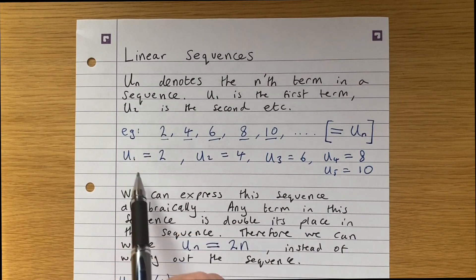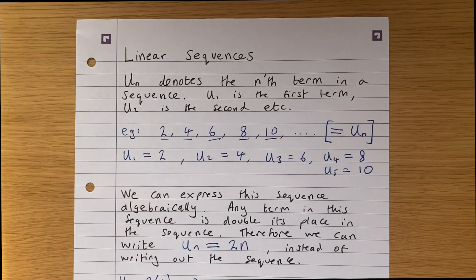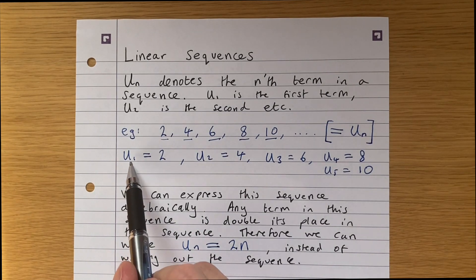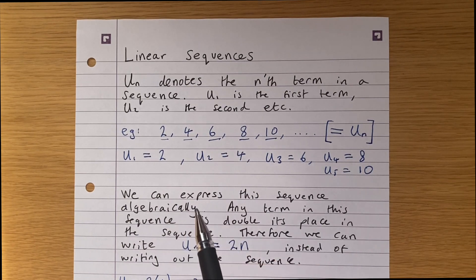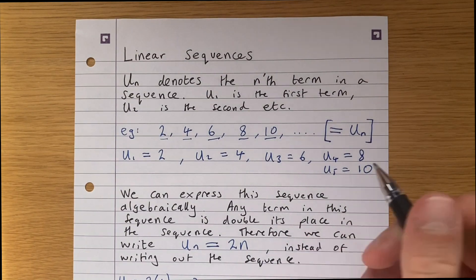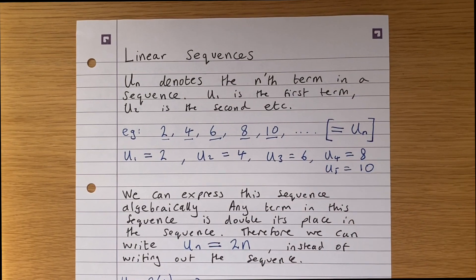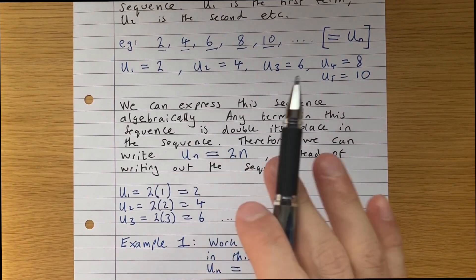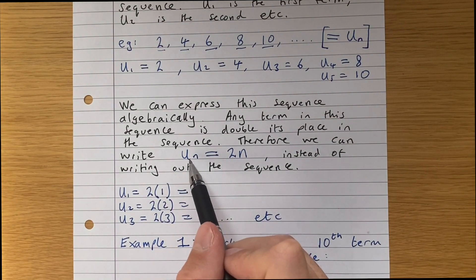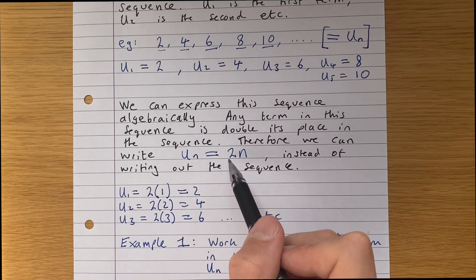So what we can do, instead of always writing out sequences like this, is express them algebraically. What we notice about this particular sequence is that every term is double its place in the sequence. u1 is 2, and 2 is double 1; u2 is 4, and 4 is double 2; u3 is 6, and 6 is double 3, and so on. So we can just say that u_n is equal to 2n. That gives us an expression to work out any term — so u100 is equal to 200, the 100th term is just 2 times 100.